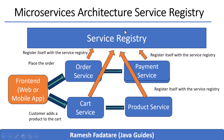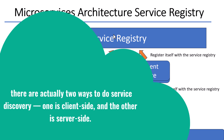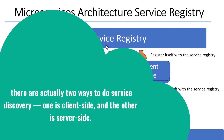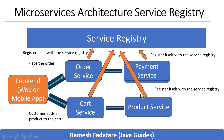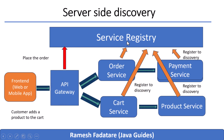This makes your system more reliable and much easier to scale. Now there are actually two ways to do service discovery: client-side and server-side. In client-side discovery, the service itself contacts the registry, picks a healthy instance, and makes the call — this gives you more flexibility and control. In server-side discovery, the request goes through a load balancer or API gateway, which talks to the registry and forwards the request to the right instance. Both are valid; which one you use depends on your system design and tooling. But the core idea is the same — services register and discover each other dynamically.